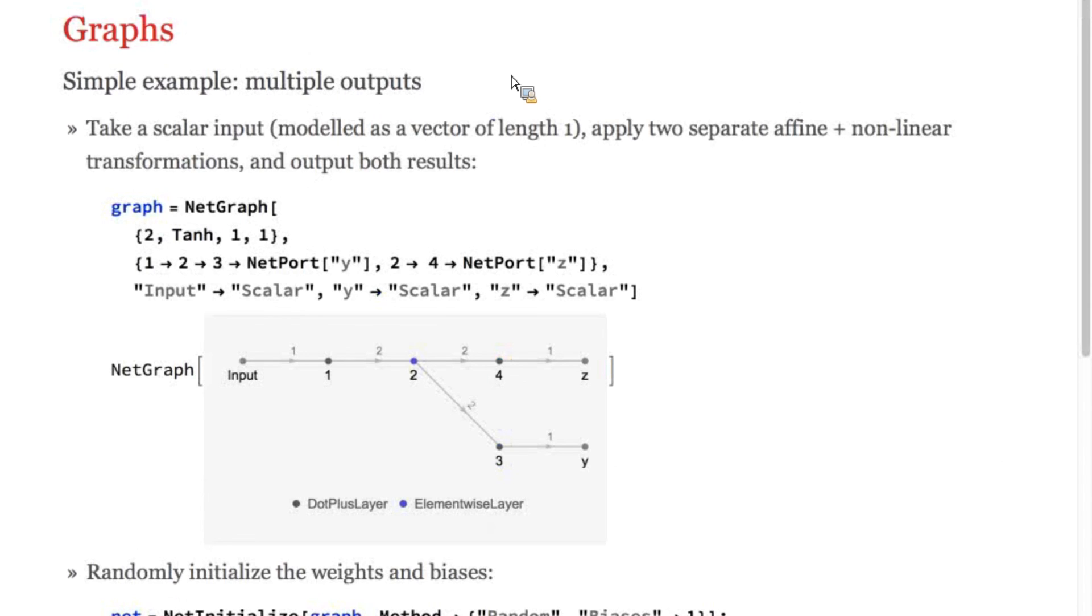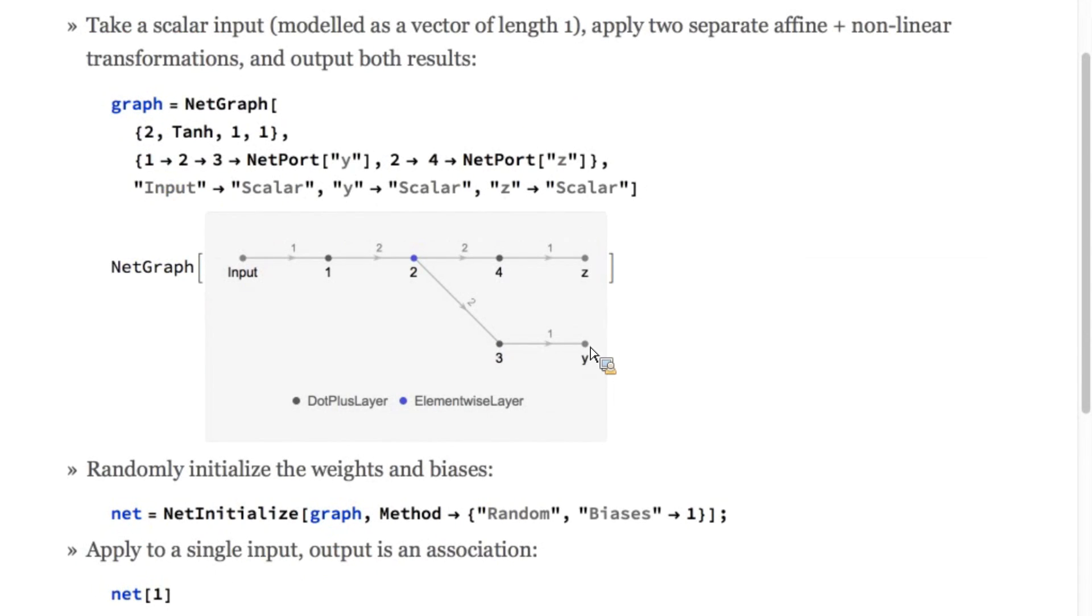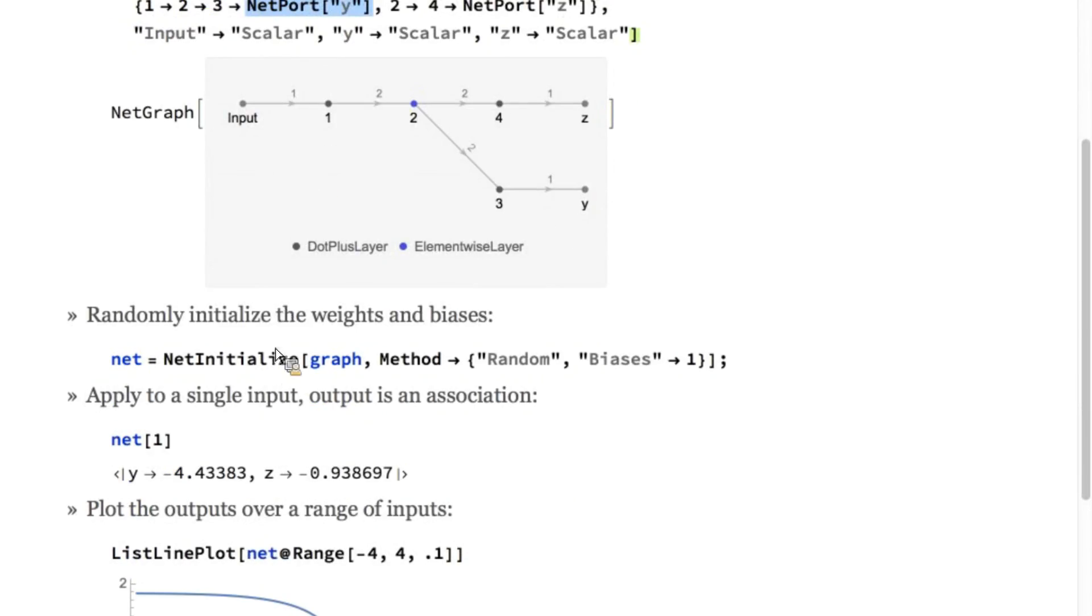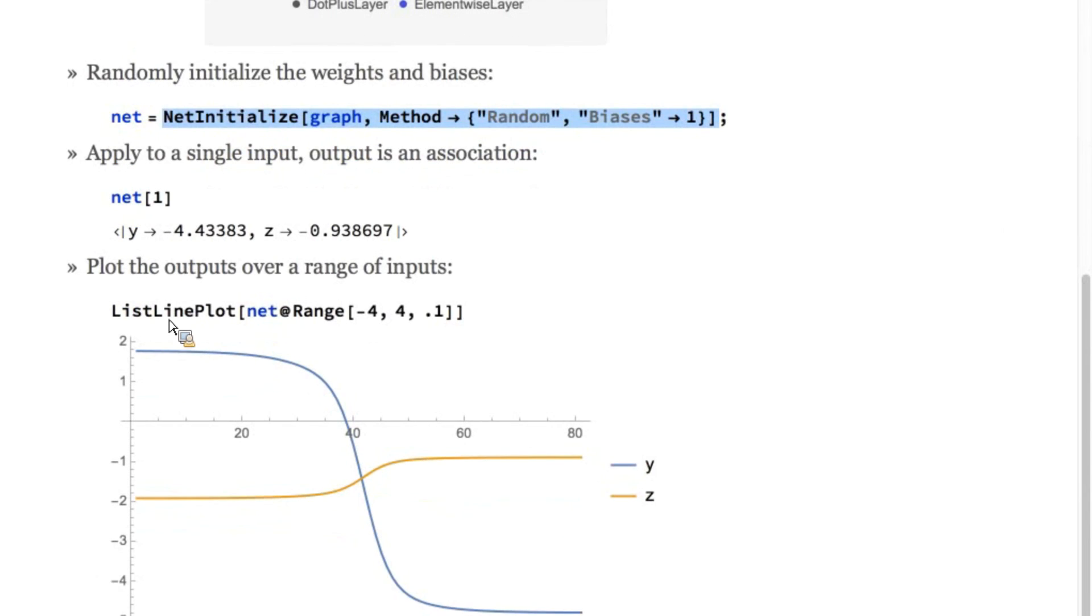Here, I'm going to show a very simple graph that we will use to perform a common operation at the start of the net, and then branch off from there to make two separate outputs. Notice that I've used net port construct to name the two outputs individually. Here, I'm randomly initializing this net because it contains some parameters, and we can apply it to an input to see the outputs of those two ports. Here, I'm visualizing what those outputs do as a function of the input.